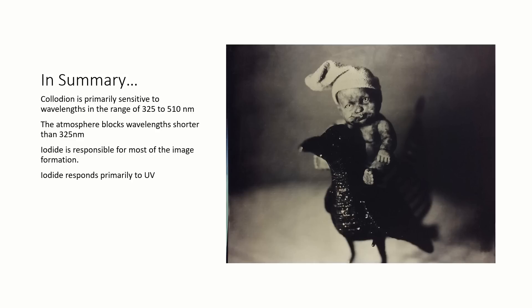Iodide responds primarily to UV. Bromide extends the film's sensitivity range further into the visible portion of the spectrum, blue-green. Iodide and bromide render images with different tonalities.